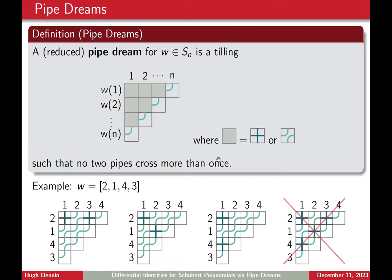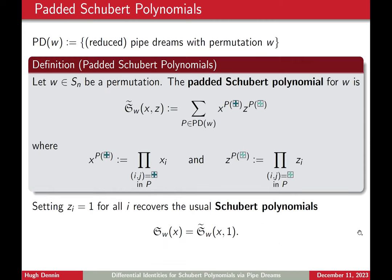Okay, so back to the example. We have our permutation 2143, and we have three pipe dreams, three reduced pipe dreams for 2143, which are these first three I have. You can check that all of the pipes connect the indices on the top to the corresponding indices on the left. This last pipe dream does the correct thing with the indices, but unfortunately my pipes three and four are crossing more than once, so I want to ban configurations like this.